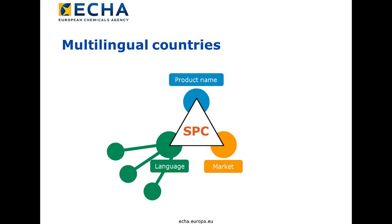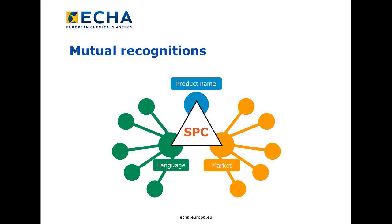You will therefore be able to create SPCs in different languages. The labeling of the different sections in the SPC and the pick list values will be automatically converted to the target language. Here, neither the product name nor the market area changes. For a product authorization, you can create a new language version from an existing SPC. If you want to apply for a mutual recognition in one or several member states, either in parallel or in sequence, you can create versions for new market areas based on existing SPCs. In this case, both the market area and possibly the language may change, but the product name does not change.